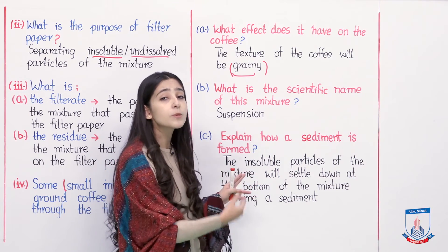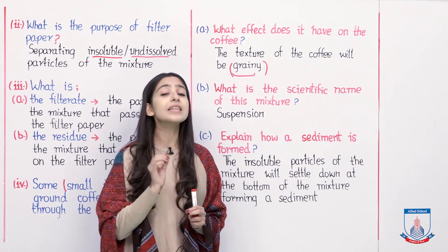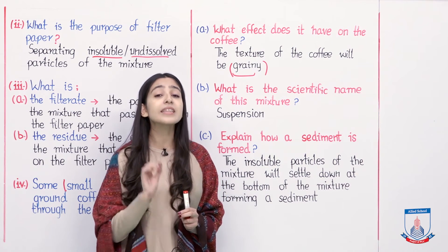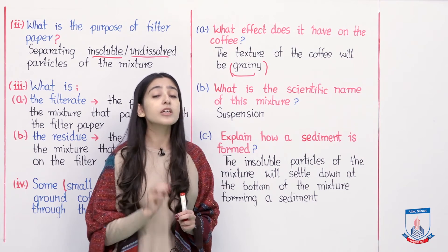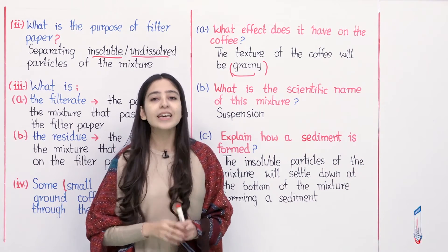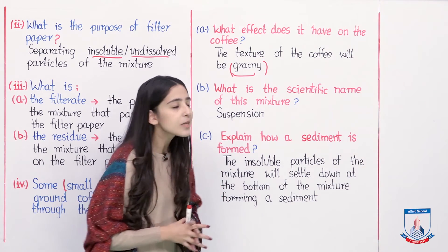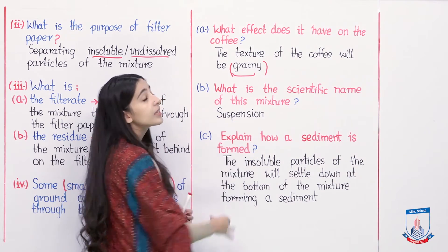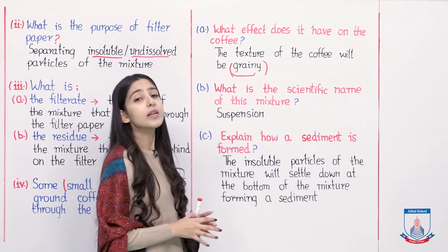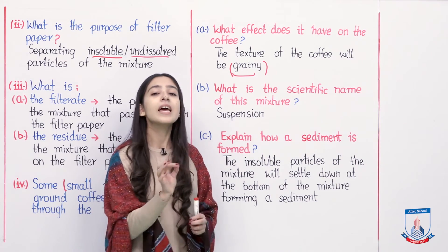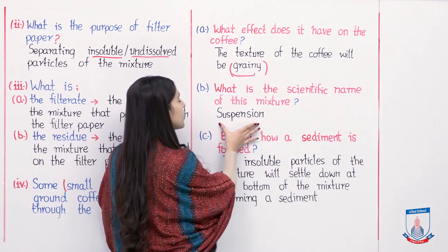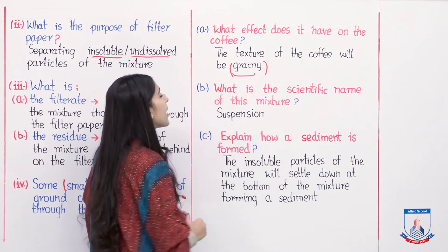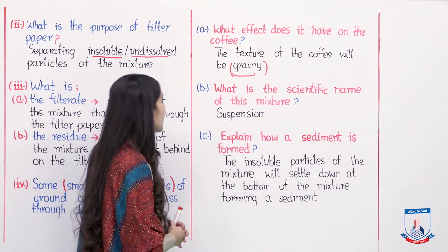In this whole experiment, you have seen that the coffee beans inside are not properly dissolved in water. They are insoluble in water. We call this mixture a suspension. In this answer, you will write suspension. A mixture in which the solute is insoluble in water or insoluble in the solvent is called a suspension. This was the answer to part B.